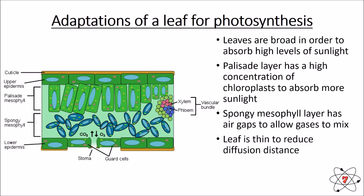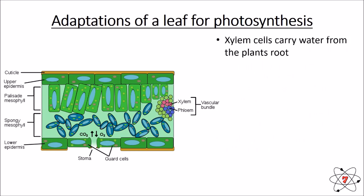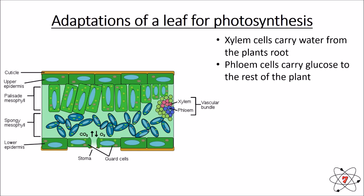The leaf is also very thin, meaning gases do not have to diffuse far, which makes the process much faster. Xylem cells carry water from the plant's roots up to the leaf, while the phloem carries glucose and other essential substances to the rest of the plant. The top layer, the cuticle, is very waxy and therefore waterproof, preventing water loss so the plant can use that water for photosynthesis.